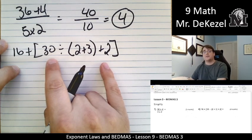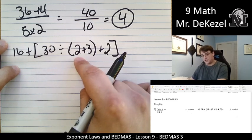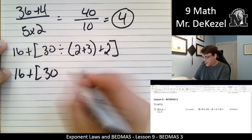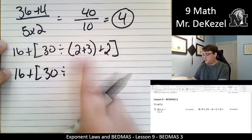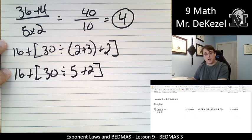I see brackets. Within those brackets I have brackets, so I got to do those brackets first. So 16 plus the big bracket 30 divided by 2 plus 3 is 5 plus 2, we got a closed bracket.